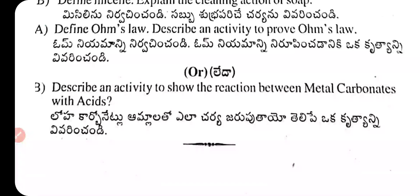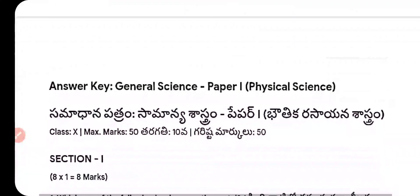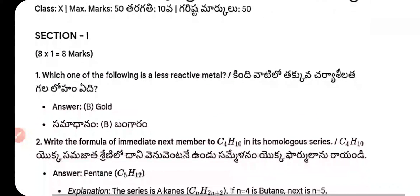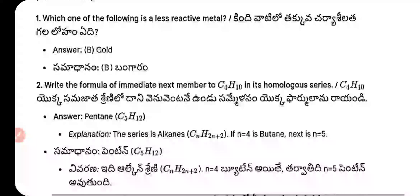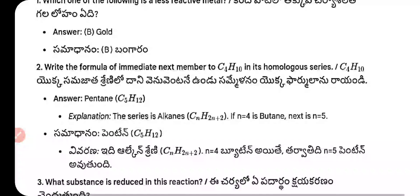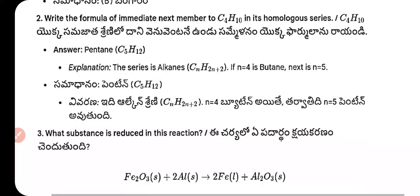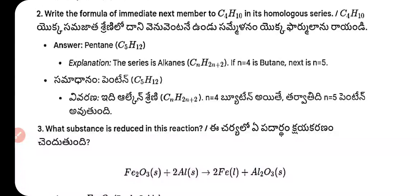Answers: Question 1 — less reactive metal is gold. Question 2 — the immediate next member of C₄H₁₀ (butane) in the alkane series (CₙH₂ₙ₊₂) is C₅H₁₂ (pentane), where n = 5.